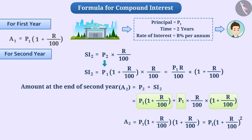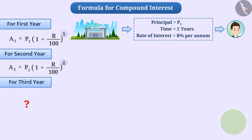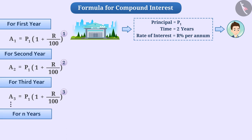We see that the power of 1 plus R by 100 in the amount for the first year is 1, and the power for the second year is 2. So, can you tell me what the formula would be for the third year? If we have to calculate the amount for a time period of N years, then the formula is AN equal to P1 into bracket 1 plus R by 100 raised to the power N.